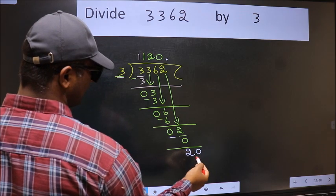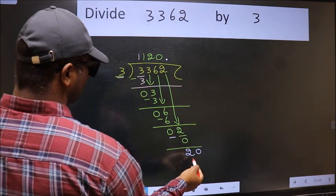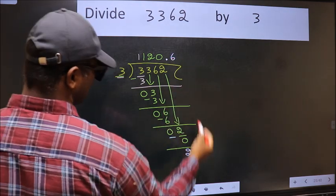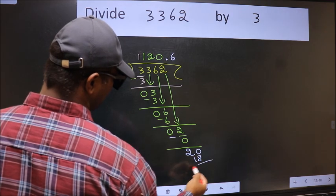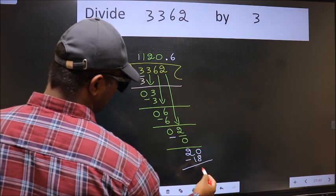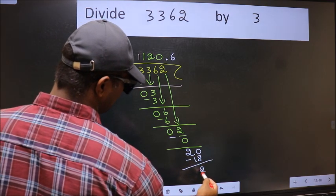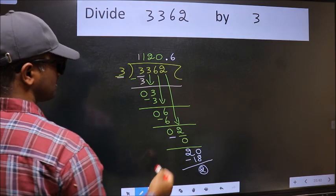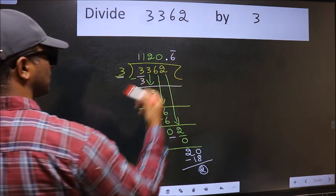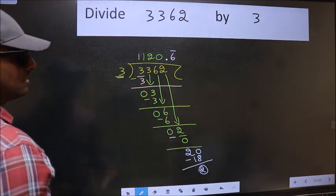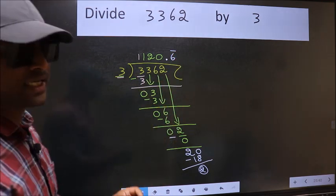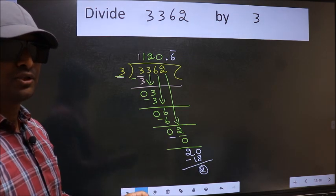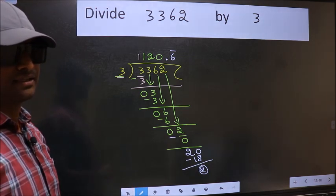So now we can put a dot and take 0. So 20. A number close to 20 in the 3 table is 18 — 3 sixes are 18. Now we should subtract. We got 2 again. That means we get a bar on this number. Did you understand where the mistake happens? You should not do that mistake.